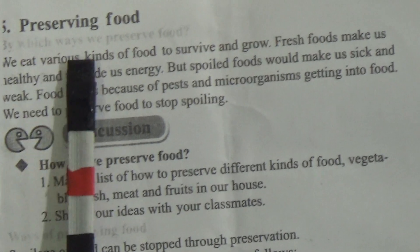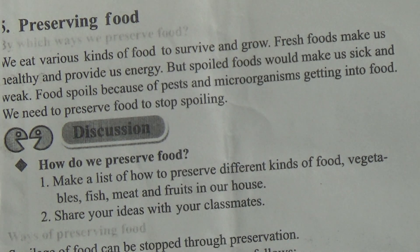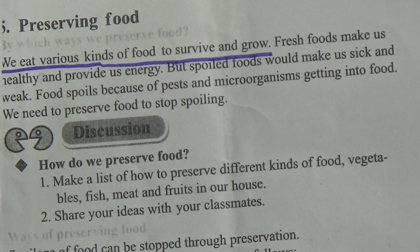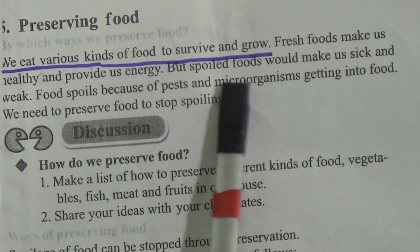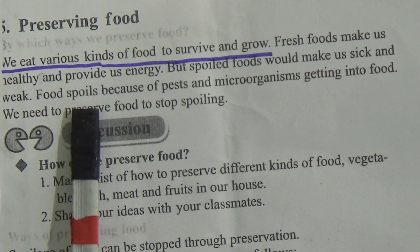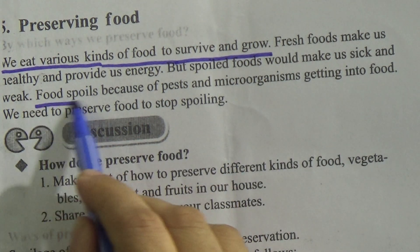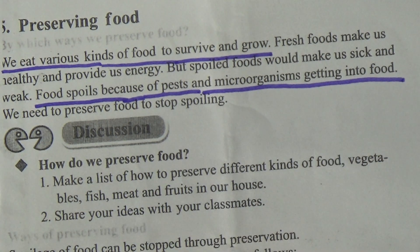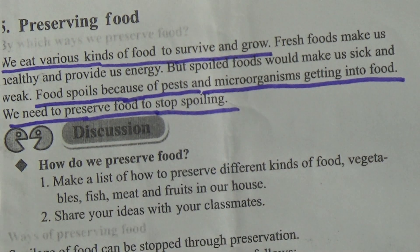Now, preserving food. By which ways do we preserve food? We eat various kinds of food to survive and grow. Fresh foods make us healthy and provide us energy, but spoiled food would make us sick and weak. Food spoils because of pests and microorganisms getting into food. We need to preserve food to stop spoiling.